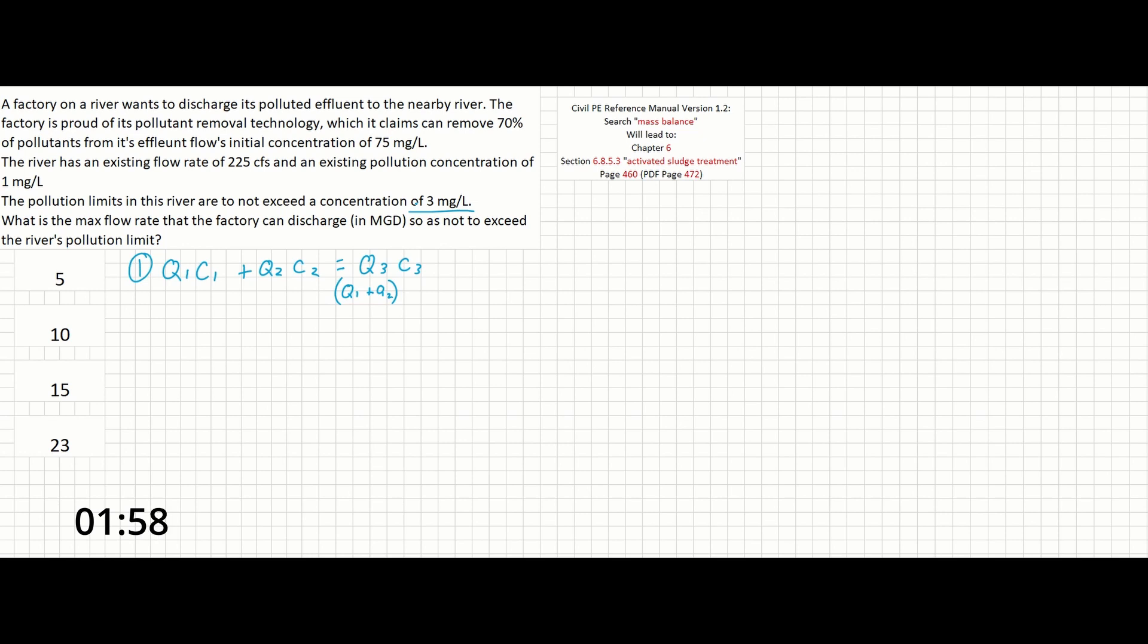c1 isn't given directly, but we can solve for it very easily. The problem states that the factory is able to remove 70% of pollution from its effluent, which is given as 75 milligrams per liter. So if 70% is removed, then 30% is remaining. This means that just about 23 milligrams per liter is leaving the factory, which will be our c1 term.